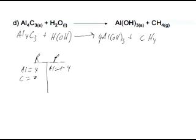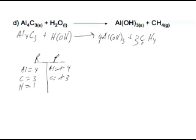Carbon here is equal to 3, but on the product side carbon is equal to 1. A common multiple between 1 and 3 is 3, so we put a 3 on the product side. Hydrogen is equal to 1 on the reacting side, but hydrogen on the product side is equal to 12 — because 3 times 4 gives me 12. So the common multiple between 1 and 12 is 12, and I place a 12 on the reactant side.